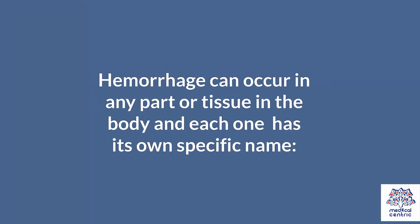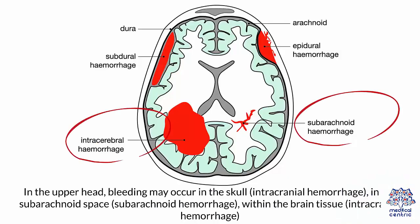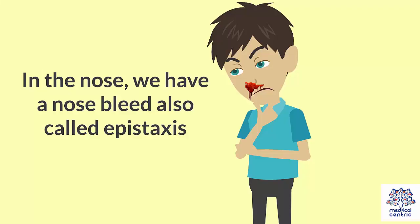Hemorrhage can occur in any part or tissue in the body, and each one has its own specific name. In the upper head, bleeding may occur in the skull, or intracranial hemorrhage; in the subarachnoid space, subarachnoid hemorrhage; or within the brain tissue, intracerebral hemorrhage. In the nose, we have a nosebleed, also called epistaxis.